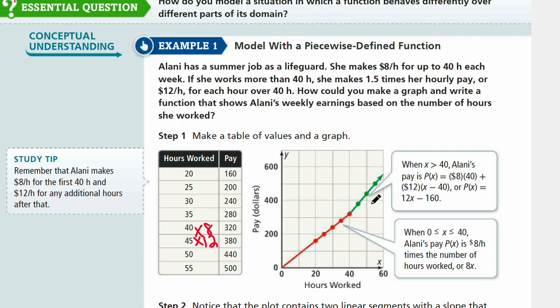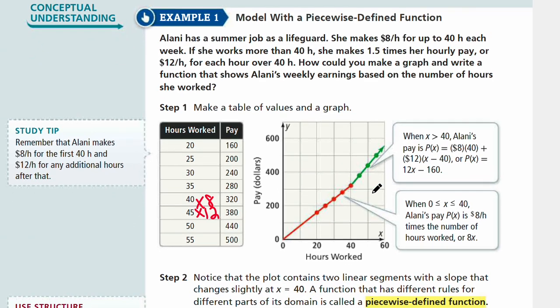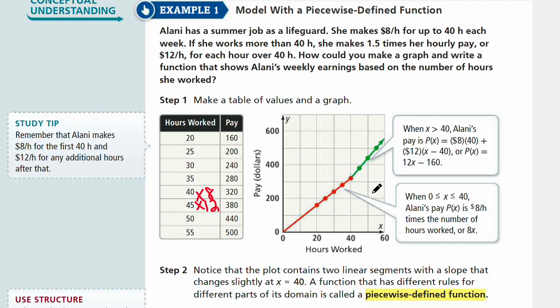You have two different slopes, which means you have two different equations. These are two different linear equations. Notice the plot contains two linear segments with a slope that changes slightly at 40. A function that has different rules for different parts of its domain is called a piecewise defined function. We're still describing one kind of situation, one context.